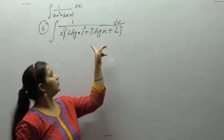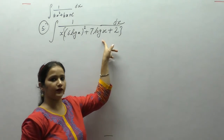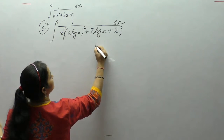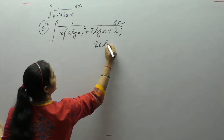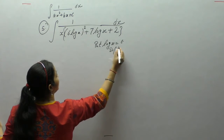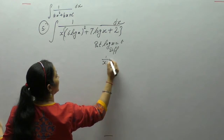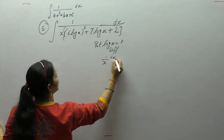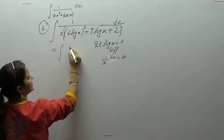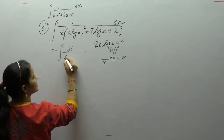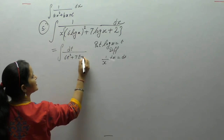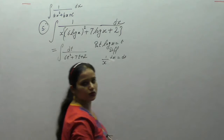Now here we have the derivative of log x. The derivative of log x is 1/x, so we put log x = t. Then (1/x)dx = dt, and the integral becomes dt upon (6t² + 7t + 2).